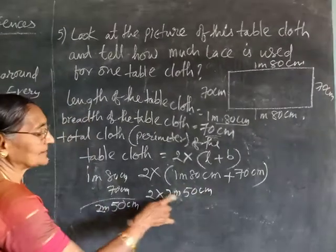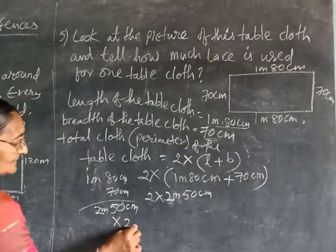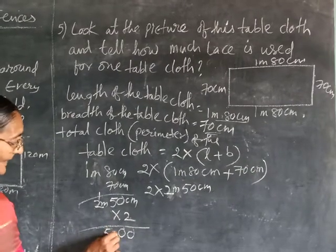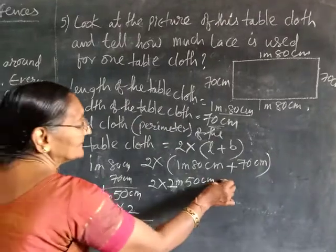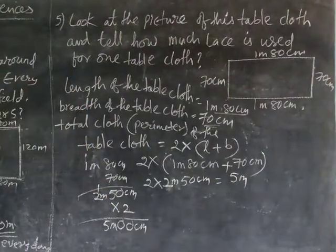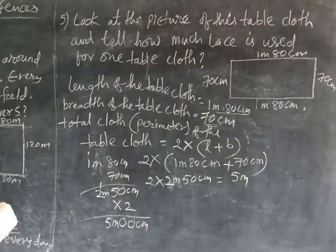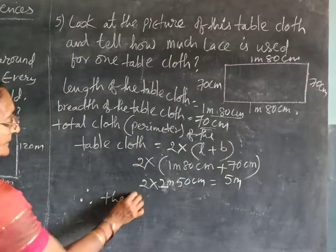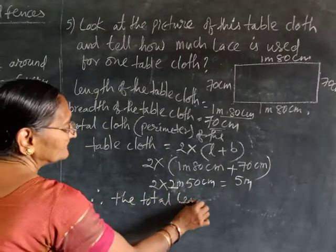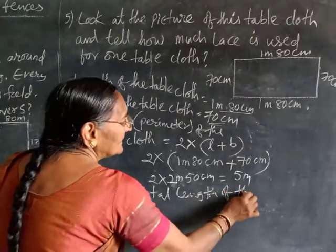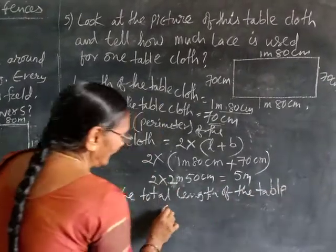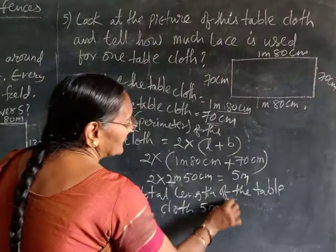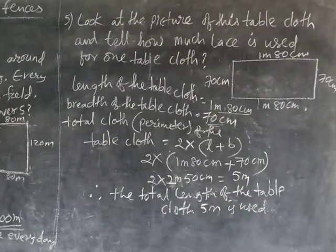This much came — 2 meters 50 centimeters — and you have to multiply by 2. 2 meters 50 centimeters into 2 gives 5 meters 0 centimeters, which means 5 meters. The total length of the tablecloth is 5 meters. Therefore, the total length of the tablecloth is 5 meters. This is the answer to question number 5.